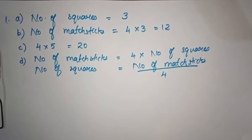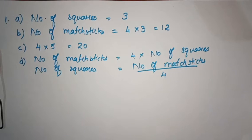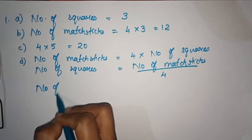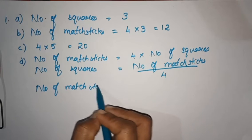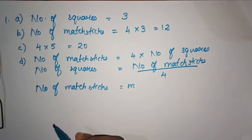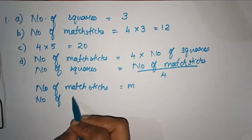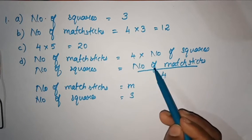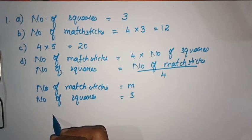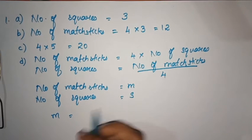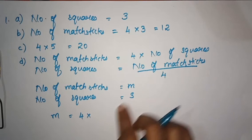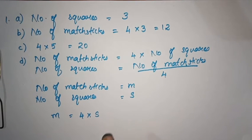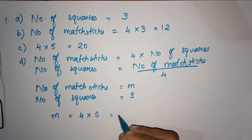So if you want to write this using a letter, we will write the number of matchsticks, which is m. Number of matchsticks is m. Number of squares is s. m is equal to 4 times the number of squares, which is s. That is 4 into s. So the number of matchsticks is written as m = 4s.